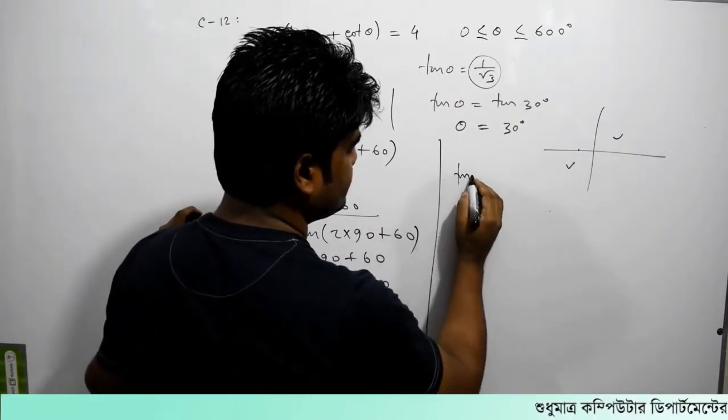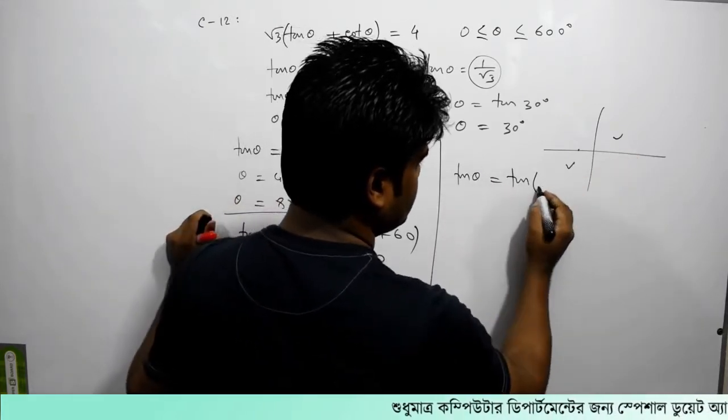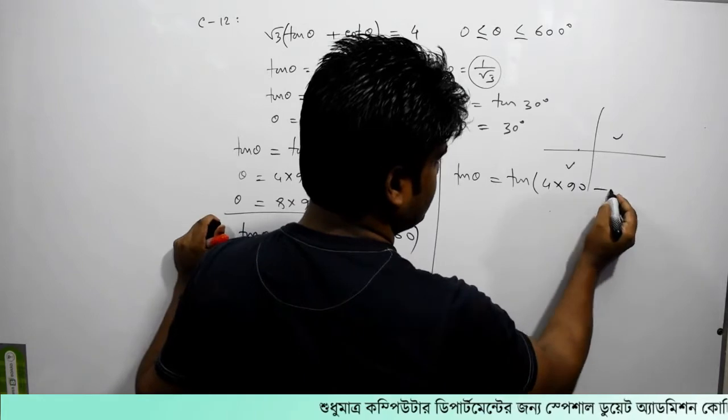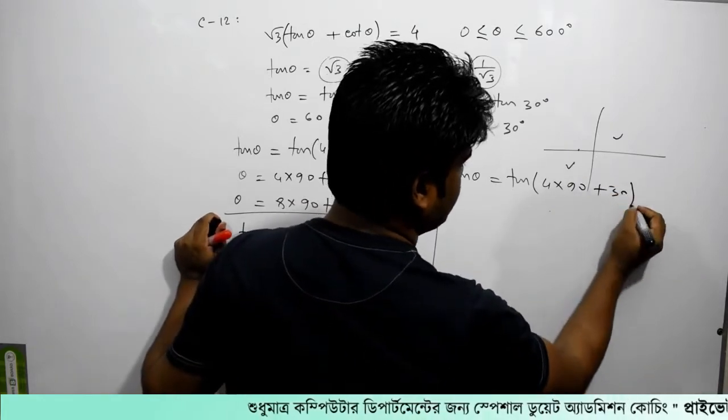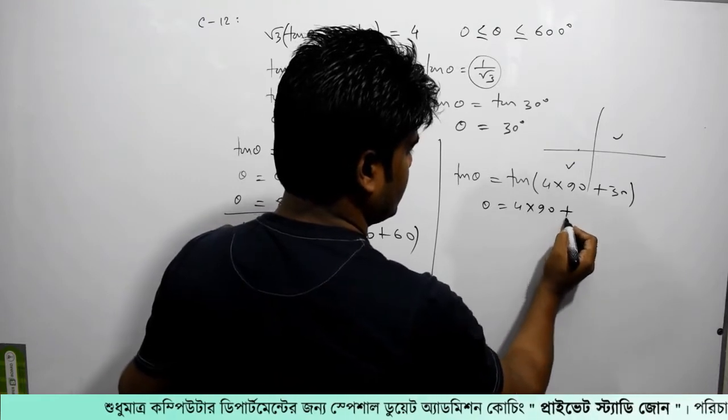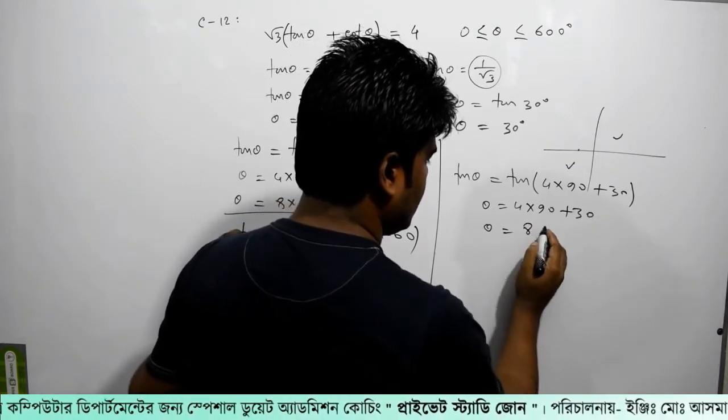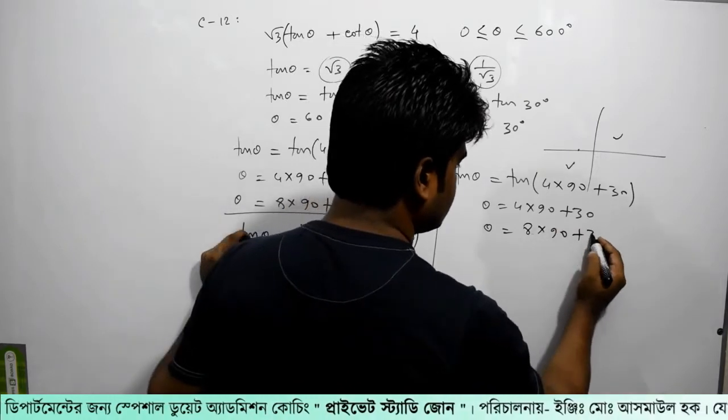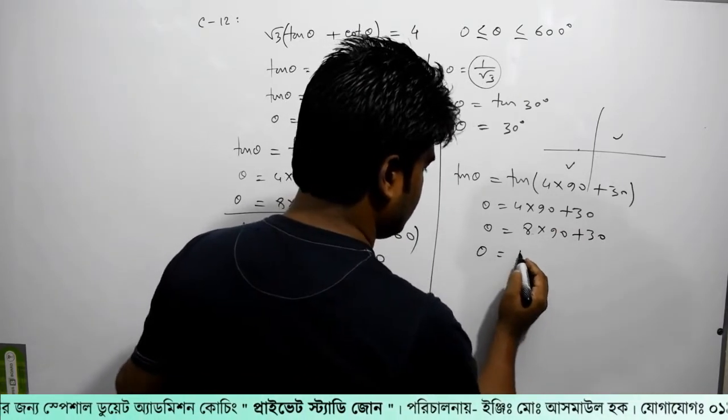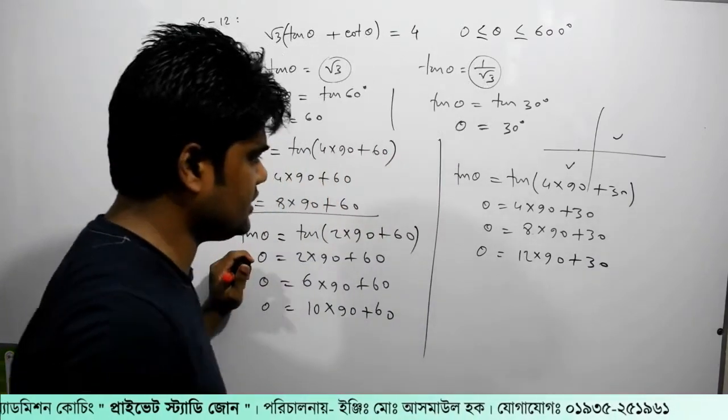So, here we are going to write theta 2 minus 90, the 1 that is equal to 4 minus 90 plus 30. I will write theta equal to 4 times 90 plus 30, then 4 times 4 times, 8 times 90 plus 30, theta, 2 times 90 plus 30. That's all.